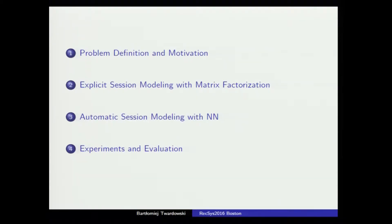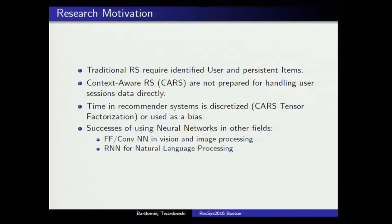First I will talk about my motivation and the problem definition, briefly describe two methods, and then present some outcome of experiments. The main motivation is that we have contextual recommender systems but we cannot directly apply them to session data. Somehow modeling the time dependencies between user events can be hard — we have to discretize it for a tensor factorization method or use it as a bias in the model. The motivation also comes from the successful stories of using neural networks in other areas.